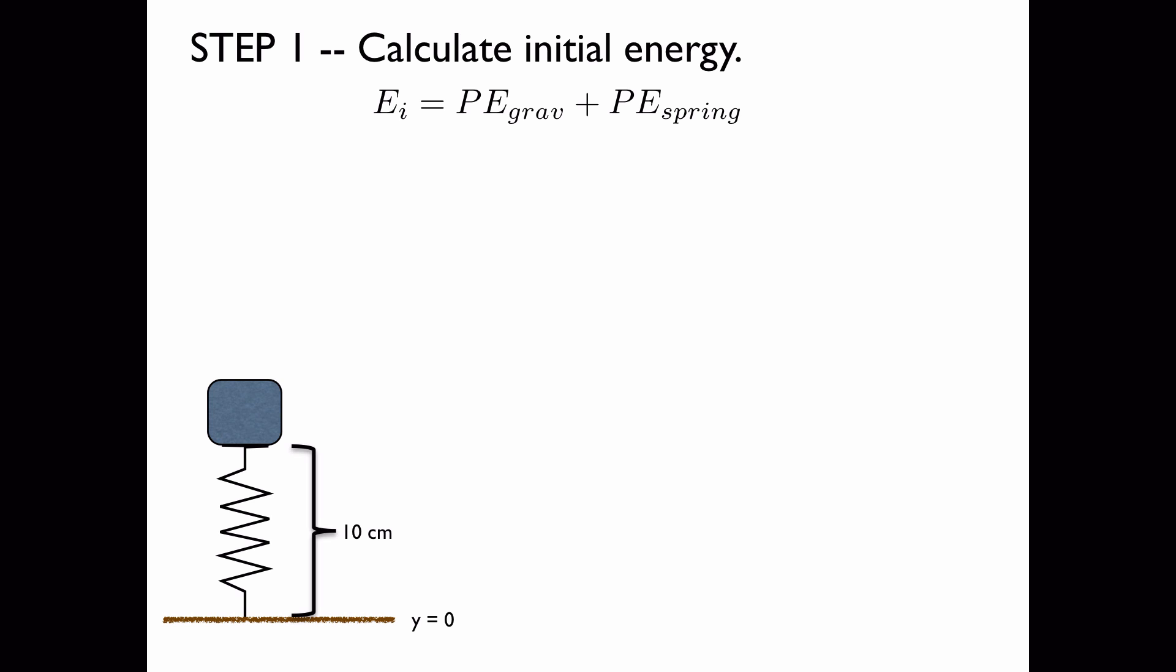The initial energy is equal to the gravitational potential energy plus the spring potential energy. Now during the course of the block's flight, the energy is transferred to kinetic energy, so it seems like it could be a much more complicated problem than it is. It's simplified because we know that at the top of the block's path, there is once again no kinetic energy, there is only gravitational potential energy. So we'll take the formula for that, which involves the height, and set it equal to the initial energy using the conservation of energy, and from there we can calculate the height.